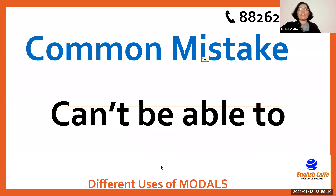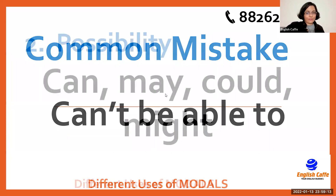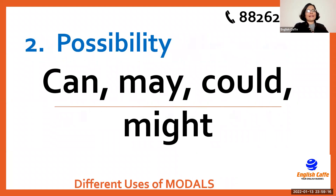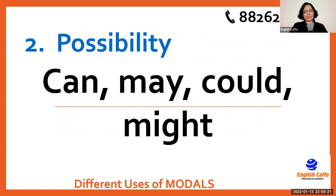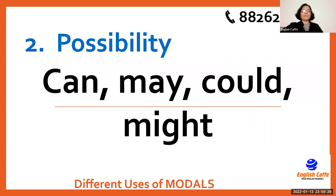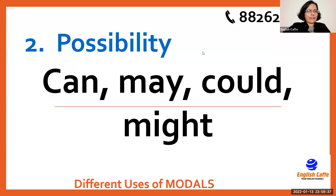Nandini says: I have been able to swim since I was eight — and that's correct. Great job. Now let's move on. Let's talk about use number two: to talk about possibility. We also use modals to talk about possibility. Possibility means that something can happen in the future or it cannot happen.